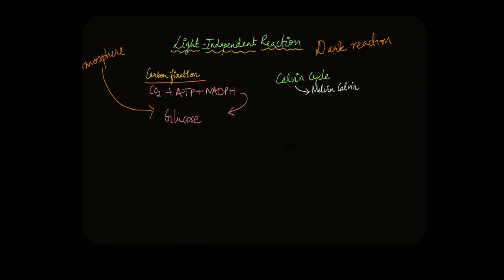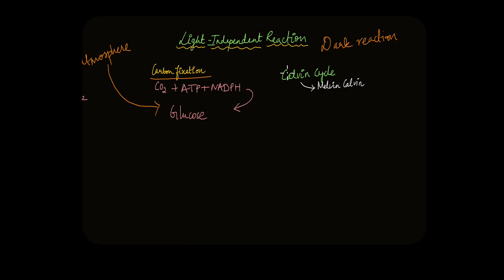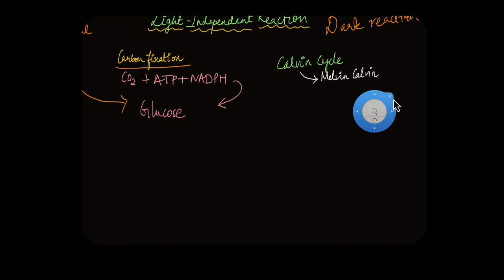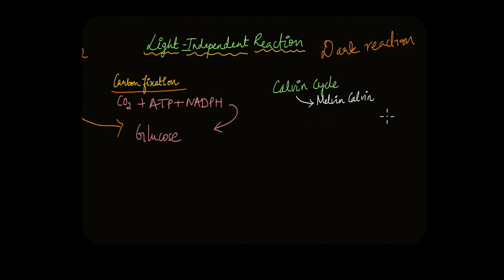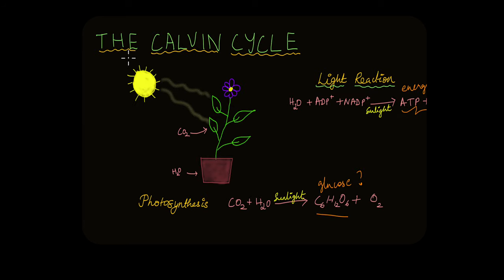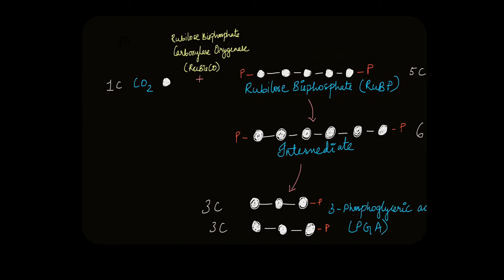It takes place during the day but just doesn't need direct sunlight like the light reaction does. This light-independent reaction is also known as the Calvin cycle, in honor of the person who discovered it, Melvin Calvin. It's a cycle because it's a cyclical process. In this video, we are going to learn about the Calvin cycle and how it takes place.